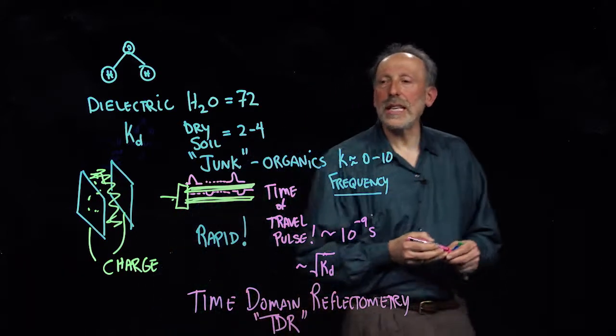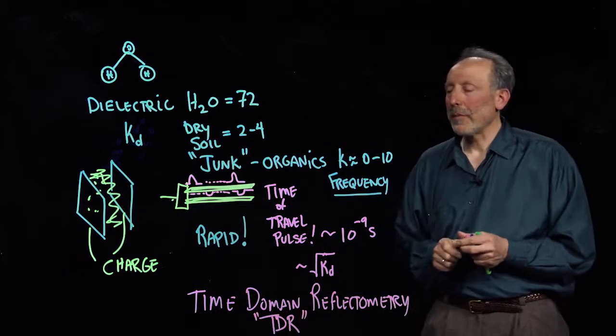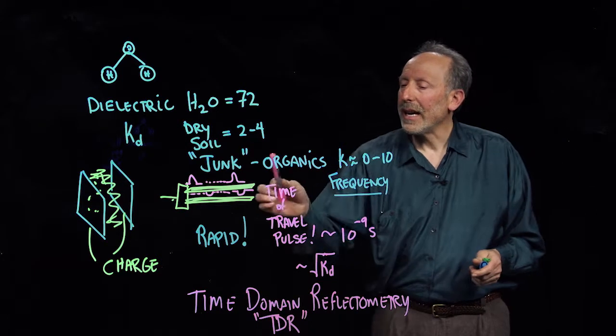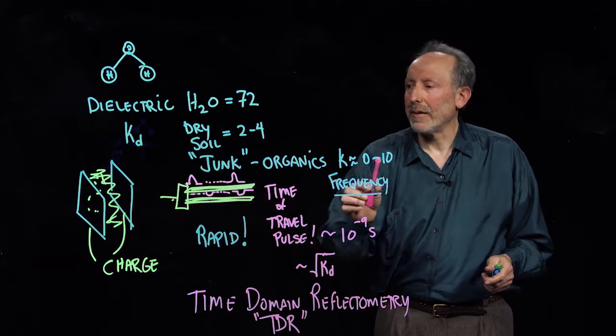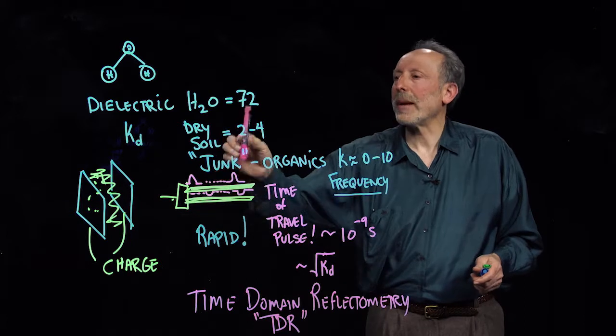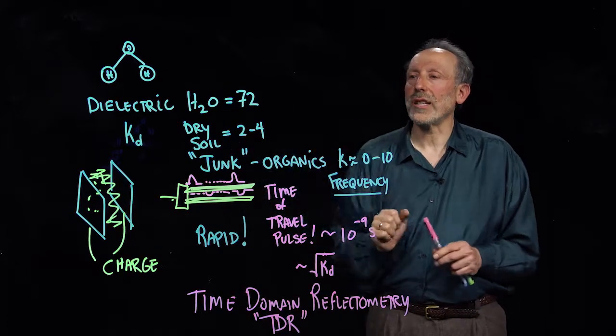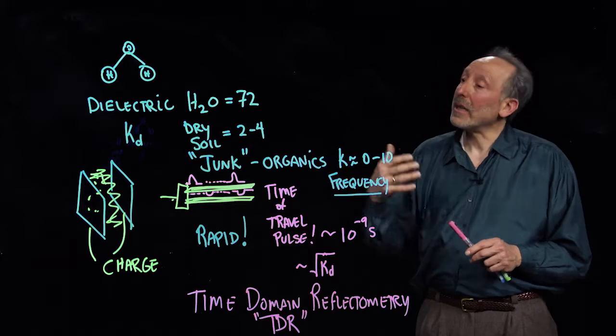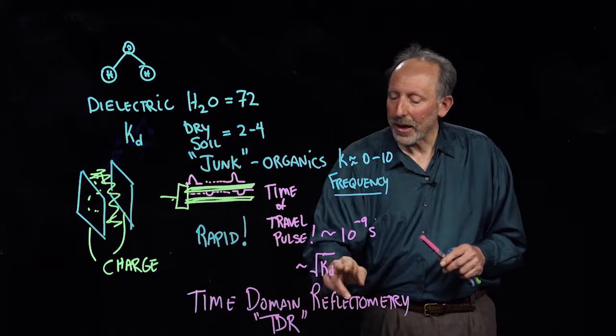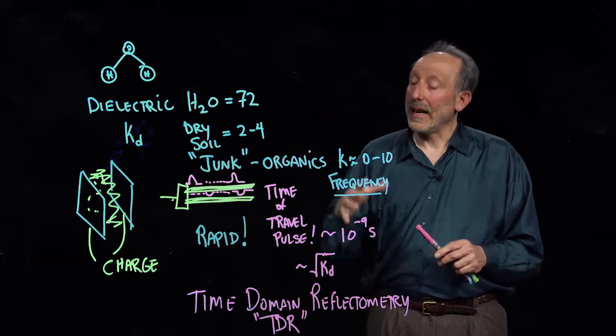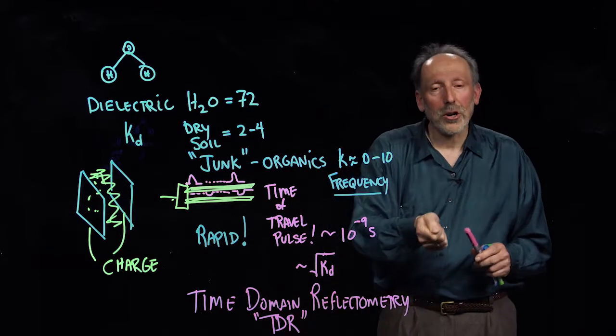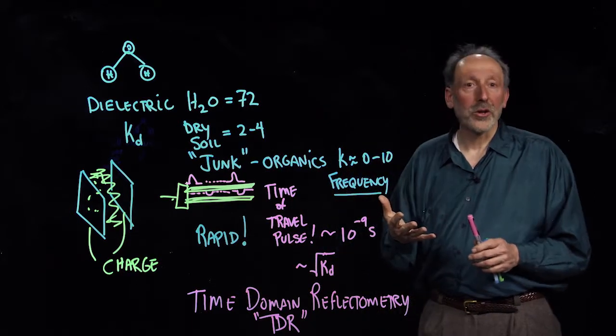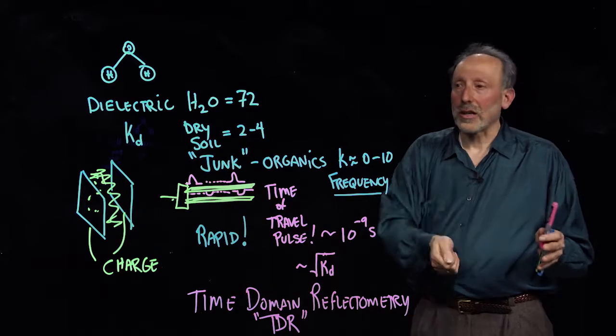TDR is a very popular way to measure moisture content because it's much less sensitive to the organics and the soil type. It pretty much reveals just the fraction of water that's there. You can calibrate this measurement of time of flight to the water content and get a relationship. You can stick your probe in and almost not worry about which soil you're using and get the water content of that local soil.